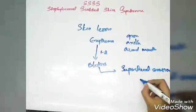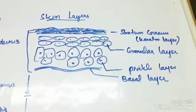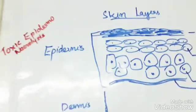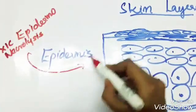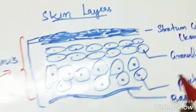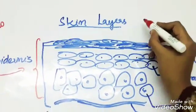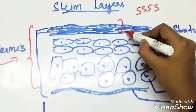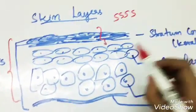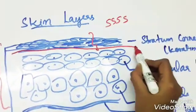Scalded skin syndrome, unlike toxic epidermal necrolysis which involves whole epidermis, in scalded skin syndrome there is only superficial epidermal split, that is beneath stratum corneum. The split is beneath the stratum corneum.